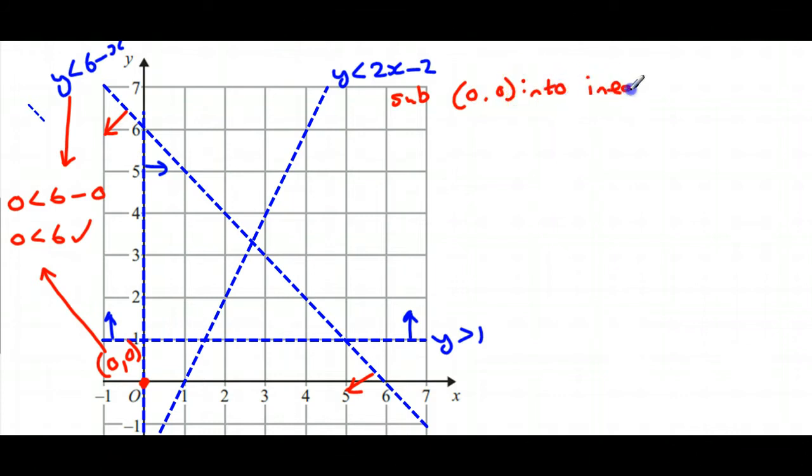So we've got 0 is less than 2 times 0 minus 2, so that's putting the point (0,0) in, and we end up with 0 is less than -2. That's obviously not true, so that means that this side is the wrong side for this equation. We're looking for everything this way.